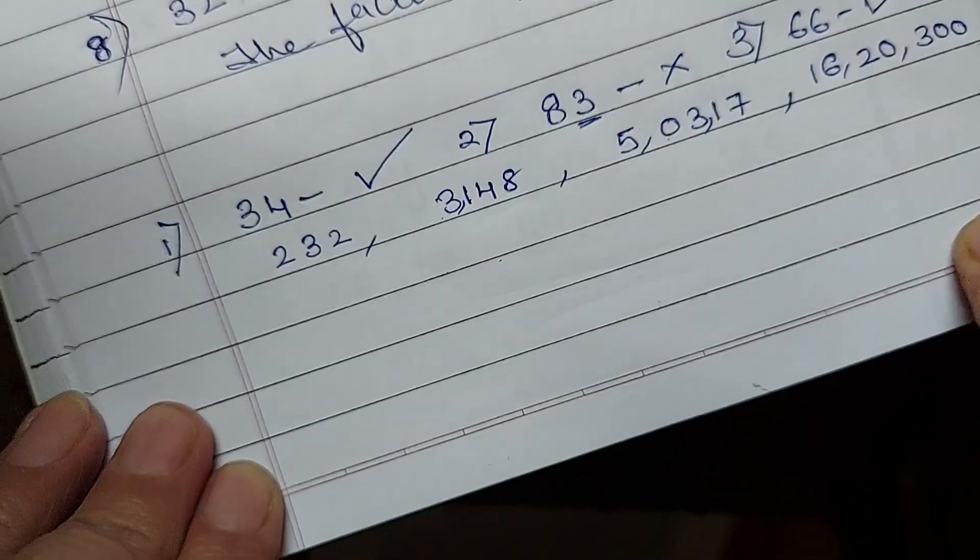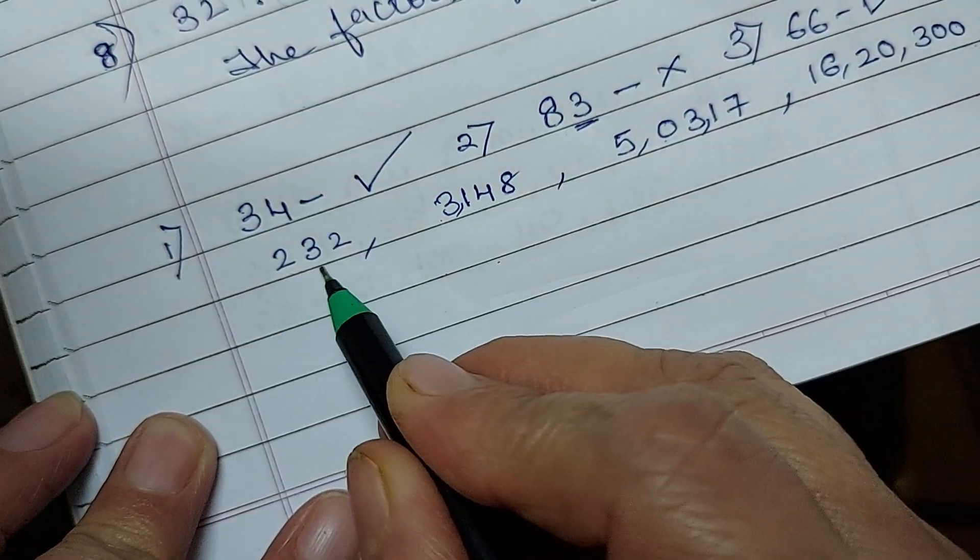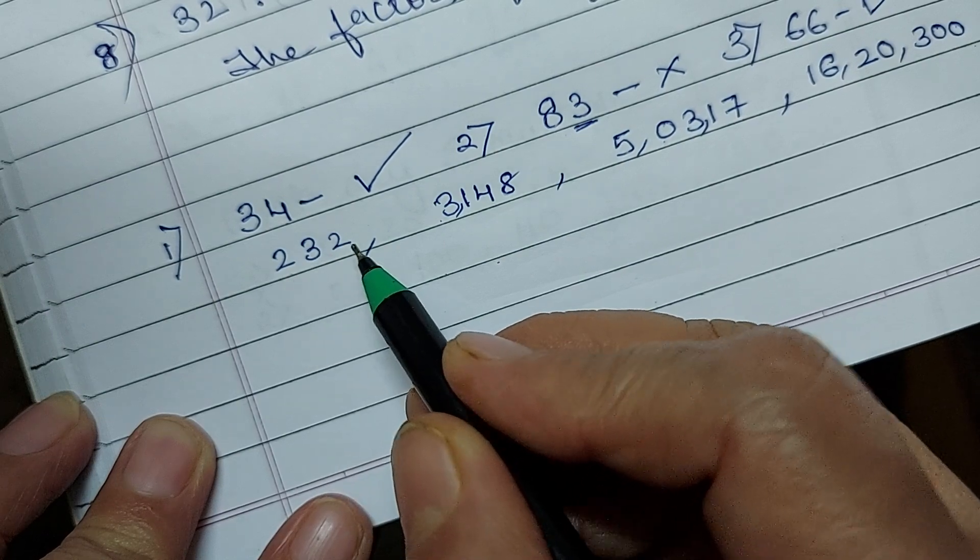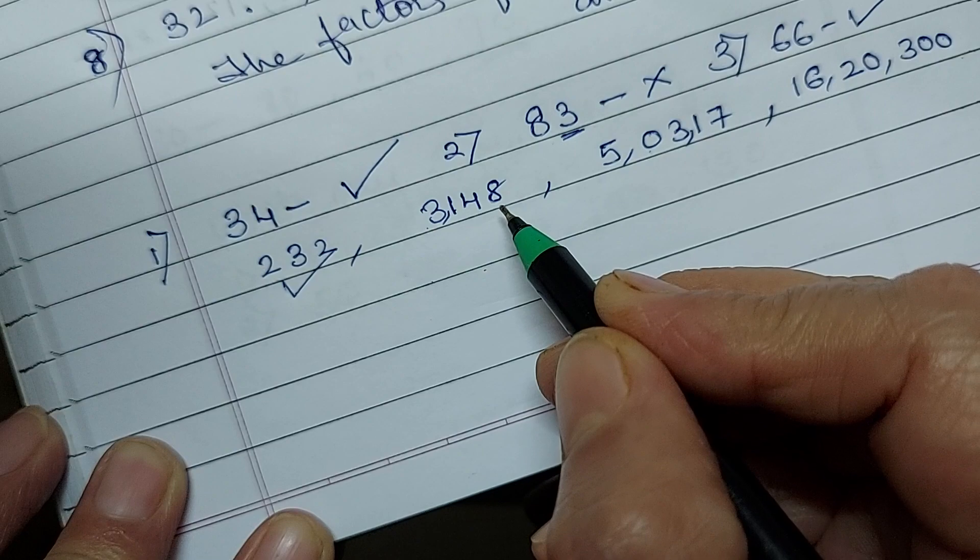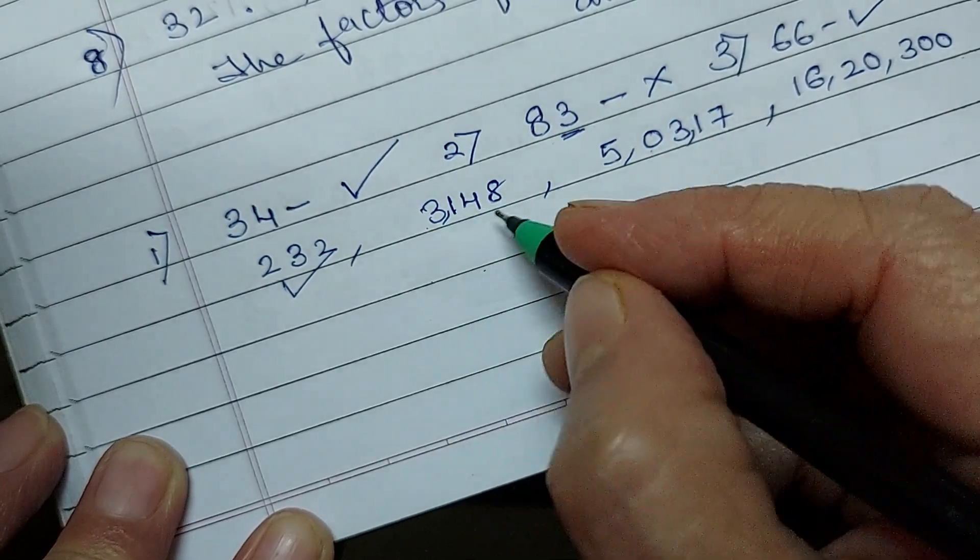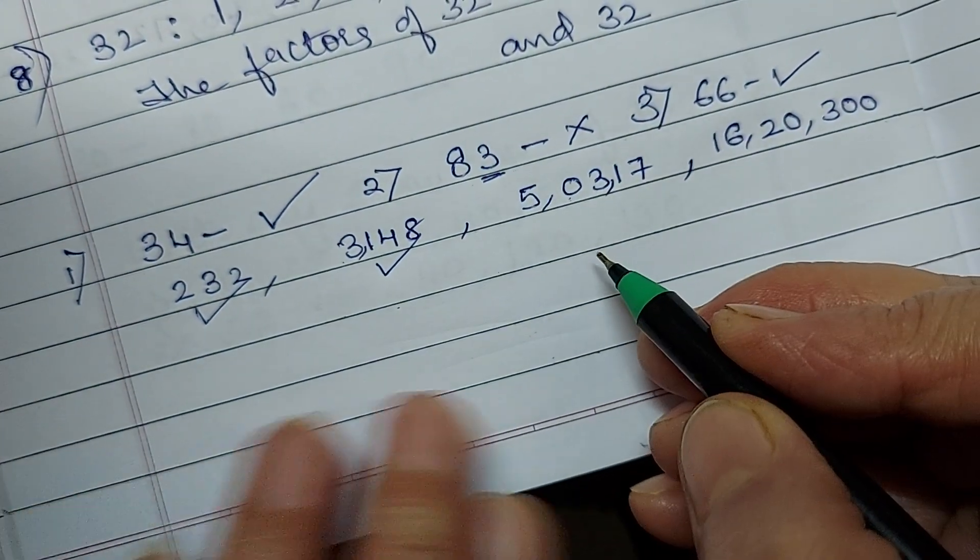Okay. So what, how to check? 232. Is it divisible by 2? Yes. This is 3148. Divisible by 2? Yes.